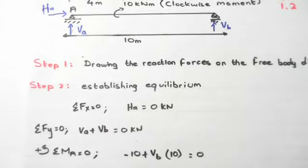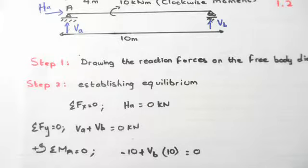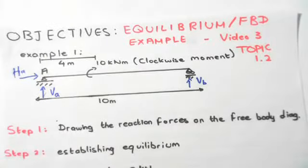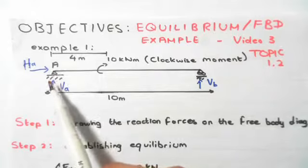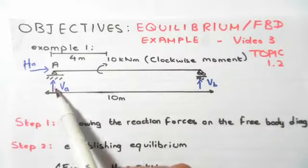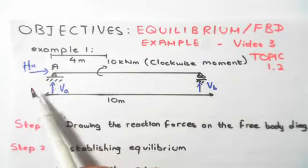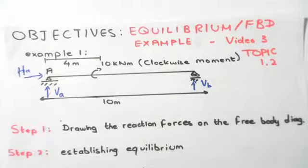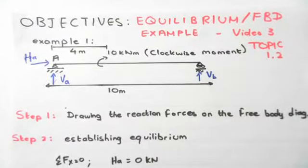We apply sum of moments about a certain point equal to zero. The sum of moments can be taken anywhere on the structure. I chose point A to minimize calculations, because Va and Ha have no lever arm about point A and cancel out — making it the easiest choice.